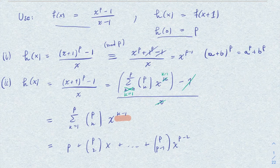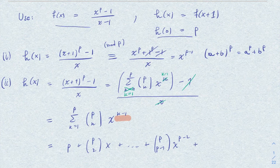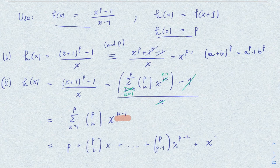So here is p minus 2. And then, of course, we have the coefficient p choose p, which is just 1, that multiplies x to the power p minus 1.